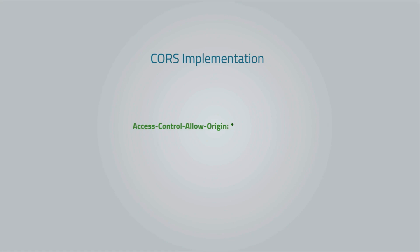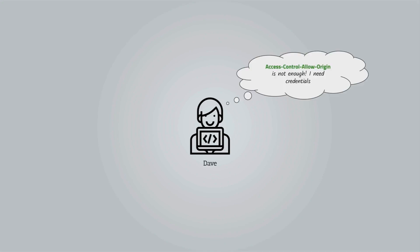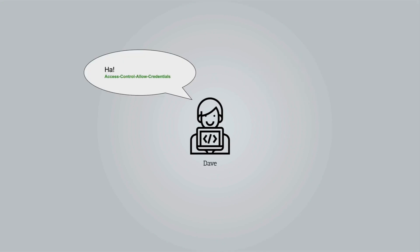Dave is developing an API for his web application and wants to allow other websites to talk to his API. After a little bit of research, he finds out that the use of Access-Control-Allow-Origin is not enough for some requests. After a bit more research, he finds out that Access-Control-Allow-Credentials needs to be set to true if the request includes credentials such as cookies, authorization headers, etc. Dave wants to allow that and it is possible as well.